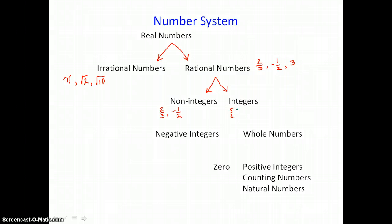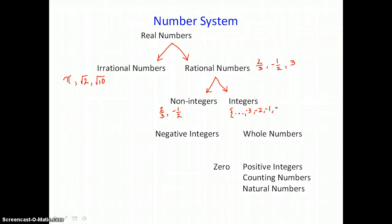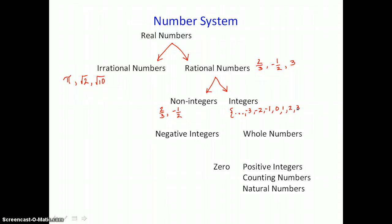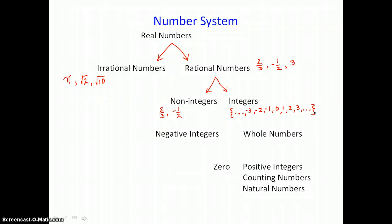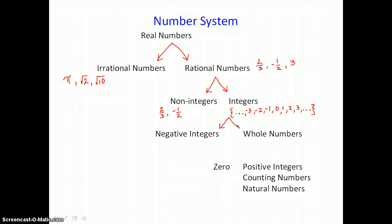The entire set of integers can be expressed using set notation. In set notation, we put three dots at either end to indicate that the numbers go on and on forever in both directions, and we enclose our numbers with braces. The integers can be divided into two subsets: the negative integers and the whole numbers.